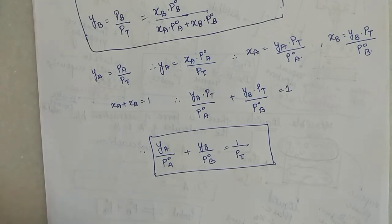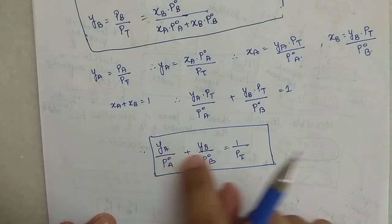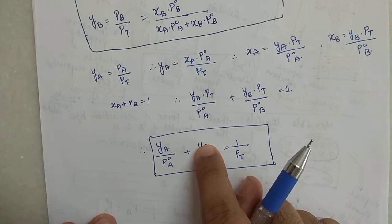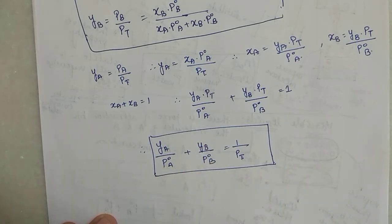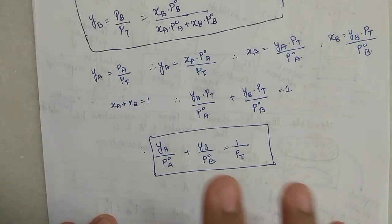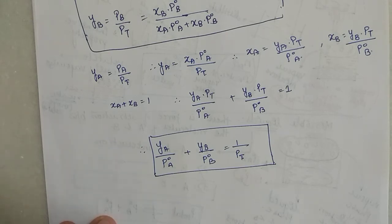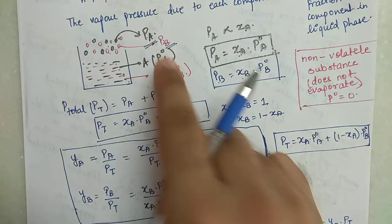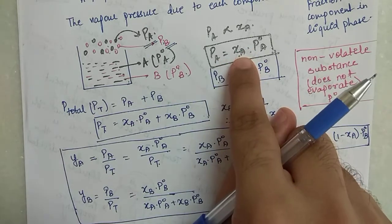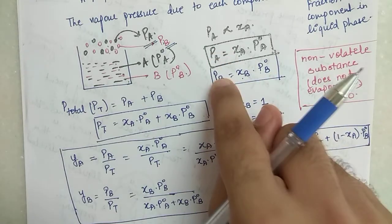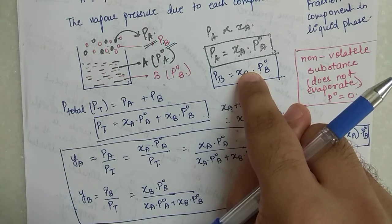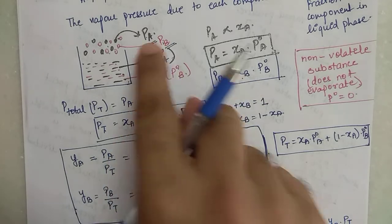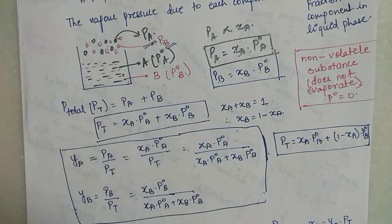So this is another relationship - ya and yb are the mole fractions in vapor phase, and P°A and P°B are the vapor pressures of pure A and pure B. This relationship comes from manipulating the equations from the previous lecture. There are two mole fractions - one in vapor phase and one in liquid phase. The vapor pressure of A and B depends on mole fractions in liquid phase: pa = xa·P°A and pb = xb·P°B. Mole fraction in vapor phase in turn depends on vapor pressures.